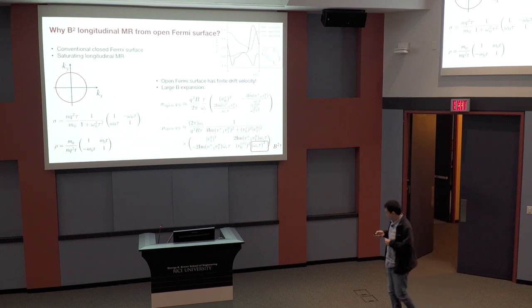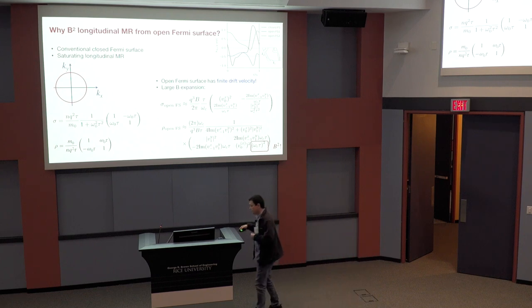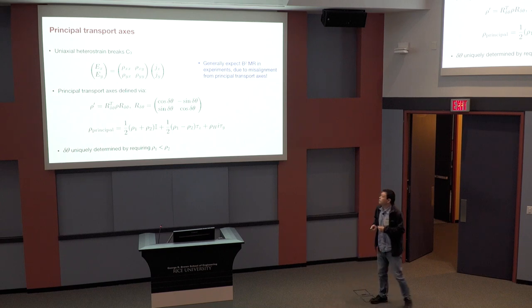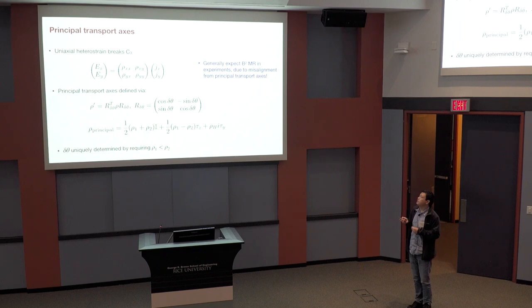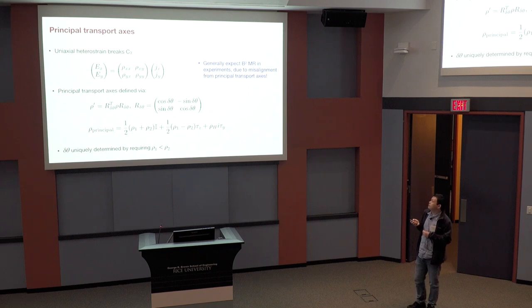Okay? So this is the main qualitative message. And before I make a comparison to the experiments, so let me mention one thing, which is that from a symmetry perspective, because the uniaxial heterostrain breaks the threefold rotational symmetry, and generically I expect, even in the absence of magnetic field, that the resistivity tensor would be non-diagonal. It has off-diagonal symmetric parts. And I can perform a rotation of this resistivity matrix to find my principal transport axis.